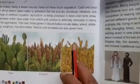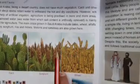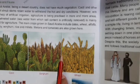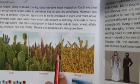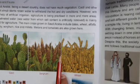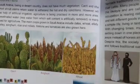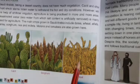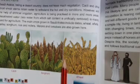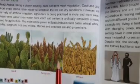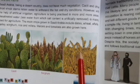The vegetation of Saudi Arabia: being a desert country, Saudi Arabia does not have much vegetation. Cacti and other short shrubs retain water to withstand the hot and dry conditions. With the help of artificial irrigation, agriculture is being practiced in more and more areas. The main crops grown in Saudi Arabia include dates, wheat, alfalfa, barley, sorghum, rice, millets, melons, and tomatoes.